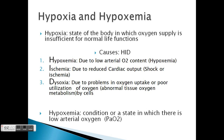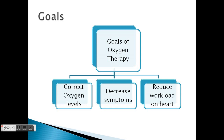Hypoxia is a state where oxygen supply is insufficient, whereas hypoxemia is a condition in which there is low arterial oxygen — that is low PaO2, the partial pressure of arterial oxygen. The causes are HID: hypoxemia due to low arterial oxygen content, ischemia due to reduced cardiac output, and dysoxia due to problems in oxygen uptake or poor utilization of oxygen — that is abnormal tissue oxygen metabolism by the cells.